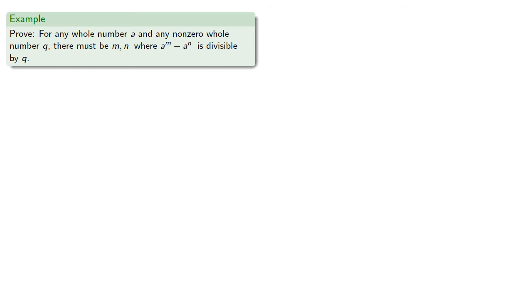For example, let's try to prove that for any whole number a and any non-zero whole number q, there must be m and n where a^m minus a^n is divisible by q.